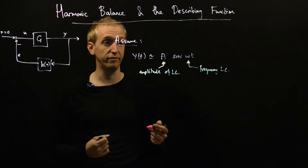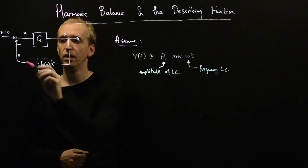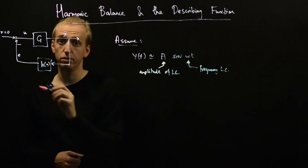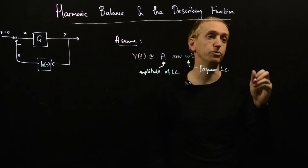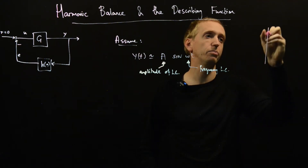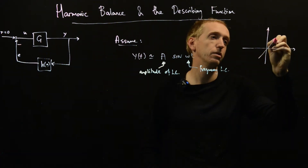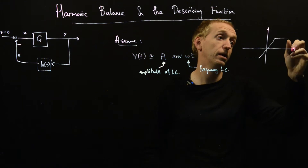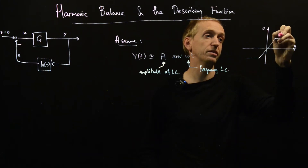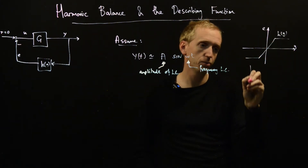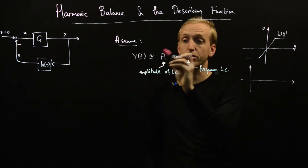The first thing we're going to say is: if this signal y is of this form, what does this signal e look like? Is it still going to be periodic? The answer is yes. Let's see that through an example. Suppose that our non-linearity H is this saturation. Here we have Y, and here we have what I'm calling E — this is our non-linearity H of Y. What happens if we put in a sinusoid with amplitude A?